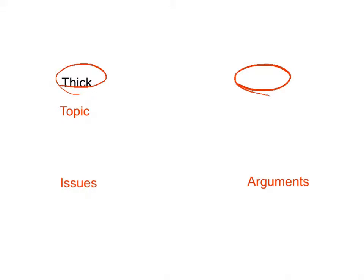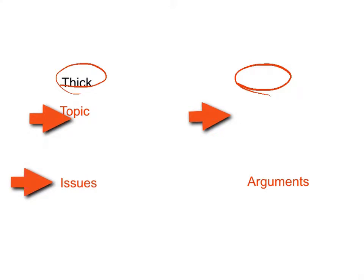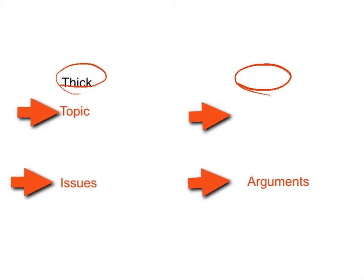For example, in descriptive writing, thick questions are usually the topic, and the details provide the thin questions. In argumentative writing, the issues represent the thick questions and the arguments represent the thin questions. For instance, take writing a biography of George Washington Carver — the thick question would be: who is George Washington Carver?